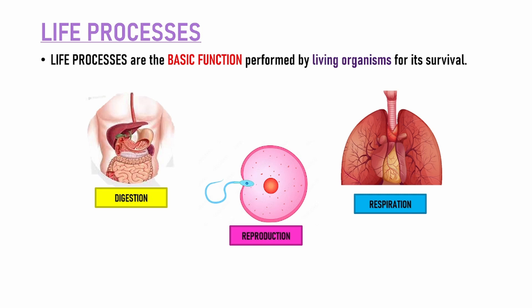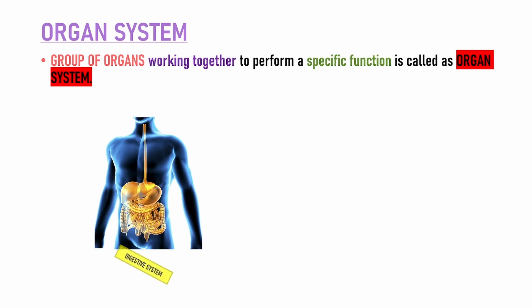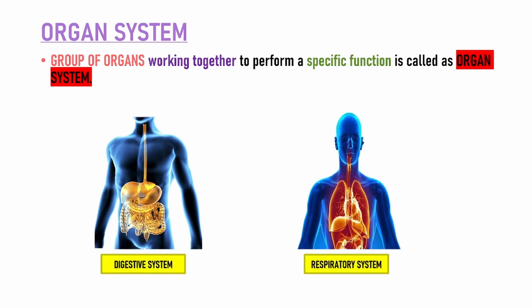Organs work together to perform certain basic functions — this we call an organ system. So the group of organs that work together to perform certain specific functions, when the organs work together, we call it an organ system. There are a lot of systems in our body, like the digestive system, the respiratory system, the circulatory system, and the excretory system. In the digestive system there is the liver, stomach, large intestine, and small intestine — all these work together, and because they are working together, they are called an organ system.